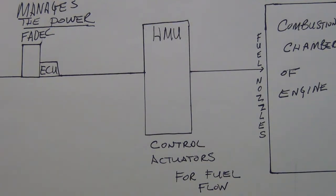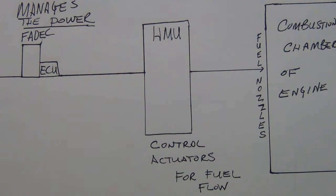A lot of things are based on N1 fan speed, so keep that in mind when talking about power management. When the pilot provides input, everything goes from there on auto, and the N1 fan speed participates in that whole process. Other applications of the fuel system include cooling the IDG oil as well as the engine oil — we'll look at those two cooler assemblies and compare them.